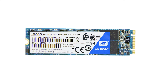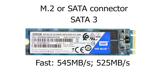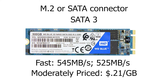It is relatively expensive at about 50 cents per gigabyte as of making this video. SATA SSDs connect to the computer over M.2 or a SATA connector. The one I'm using today is a Western Digital Bloom model — an M.2 drive using the SATA 3 interface. It is pretty fast at 545 and 525 MB per second read and write, and is moderately priced at about 21 cents per gigabyte.